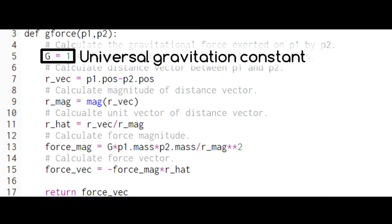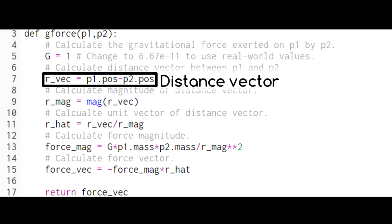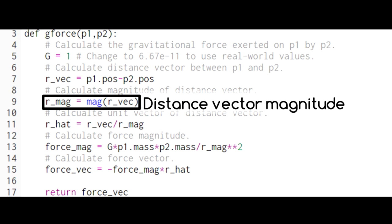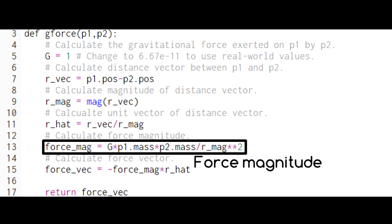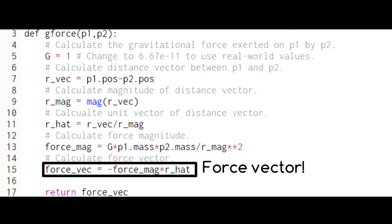Here, it sets a value for the universal gravitation constant. Here, it subtracts the two positions to give the distance vector. Here, it calculates the magnitude of the distance vector. Here, it calculates the direction vector r hat. Here, it calculates the magnitude of the force. And here, it combines the magnitude and direction into a vector.